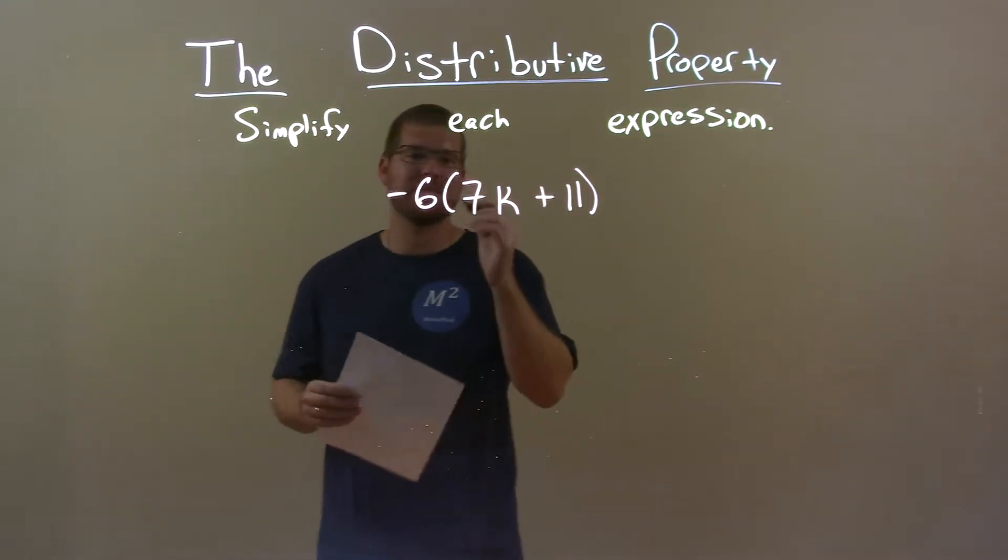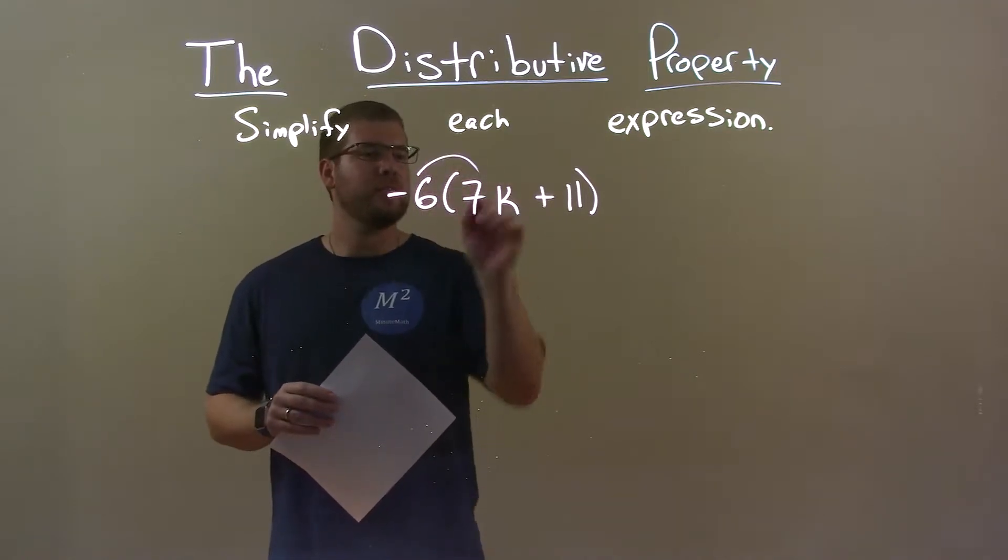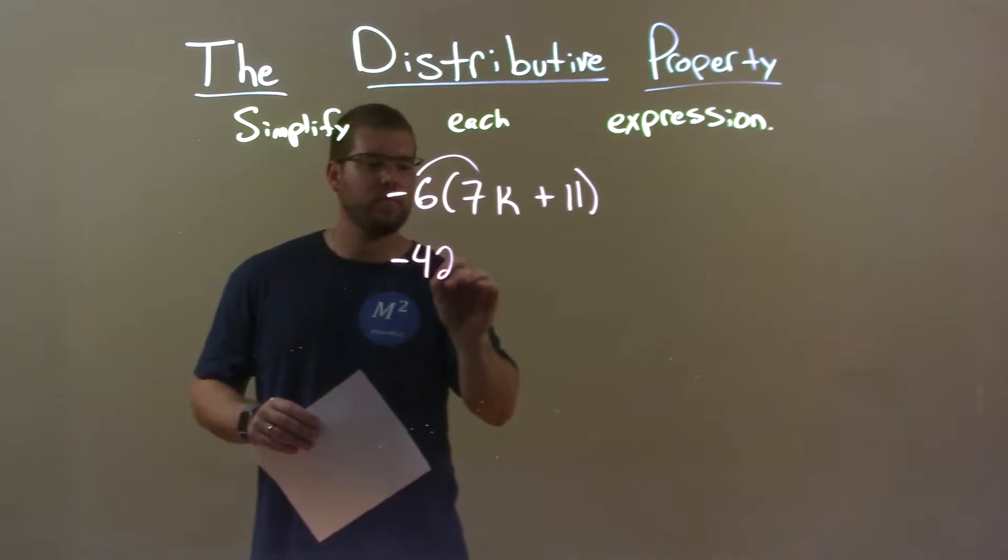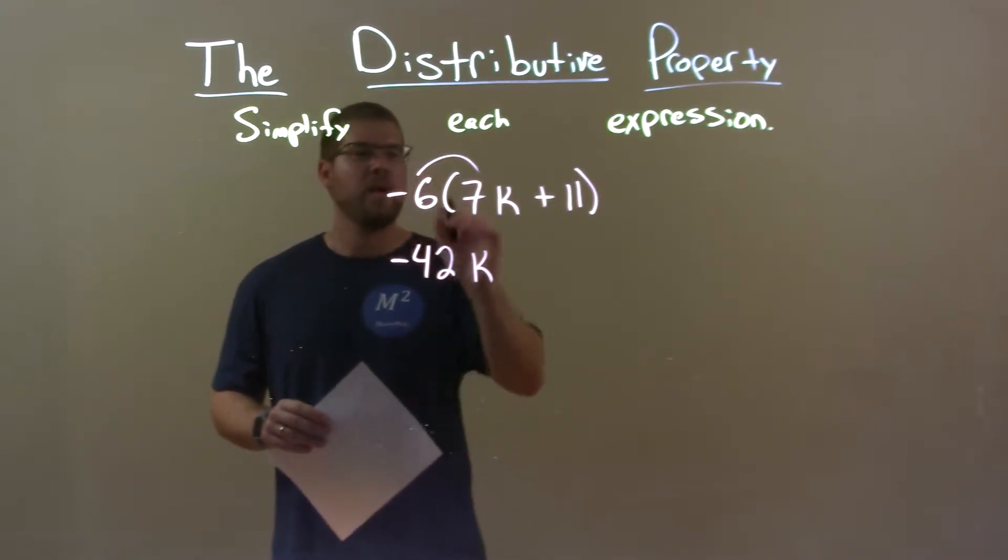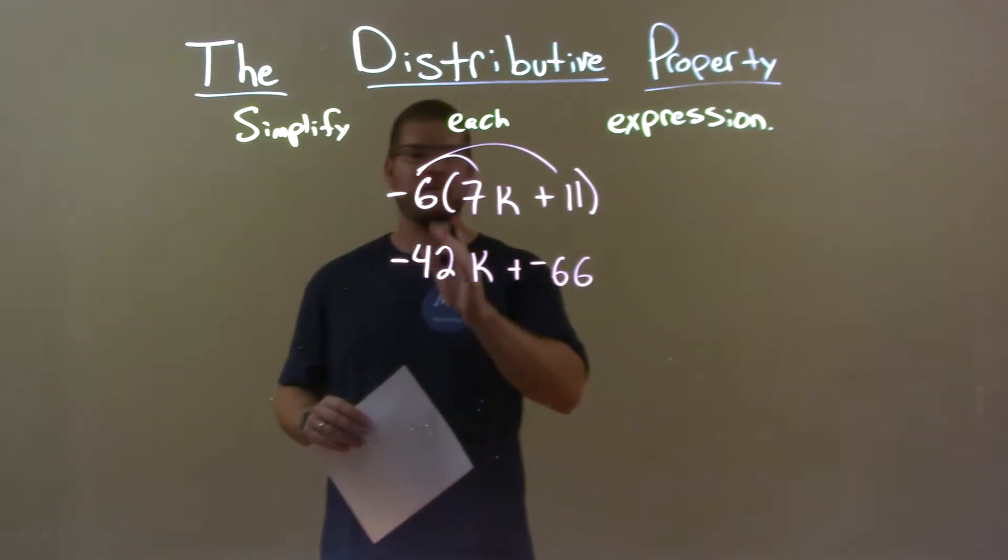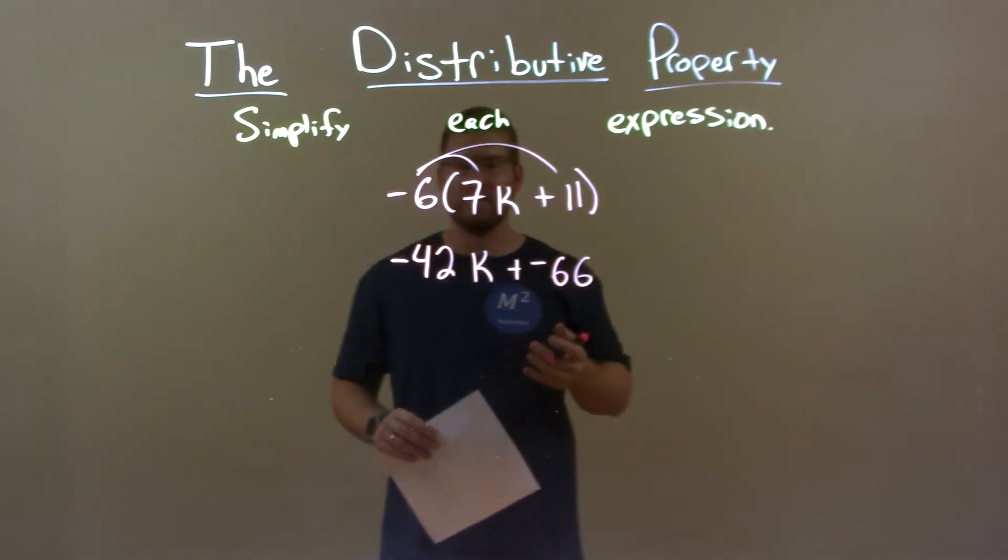So now I have to distribute the negative 6 across. Negative 6 times 7k is negative 42k. Then the negative 6 gets multiplied by the 11 and we have negative 66. It's negative 6 times 11, negative 66.